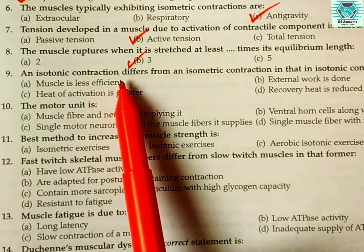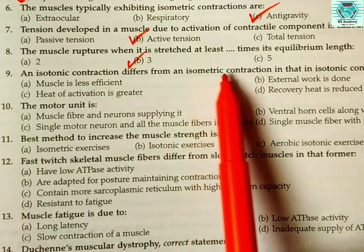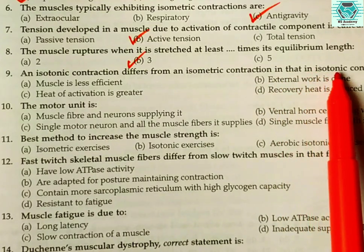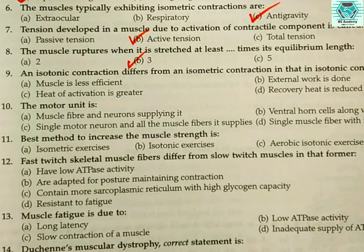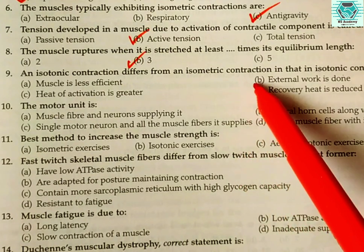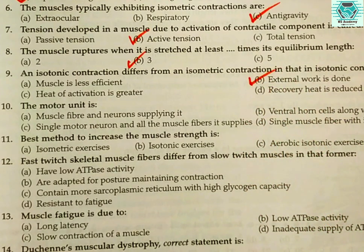Number nine: an isotonic contraction differs from an isometric contraction in that in isotonic contraction — (a) muscle is less efficient, (b) external work is done, (c) heat of activation is greater, or (d) recovery heat is reduced? Generally we know that in isotonic contraction external work is done, so that is the right answer.